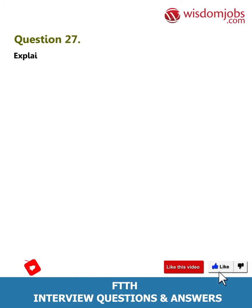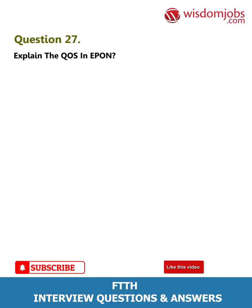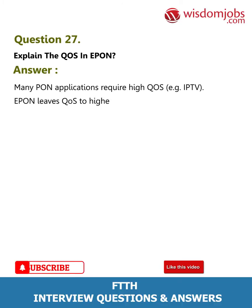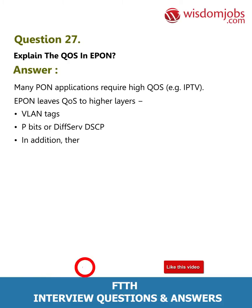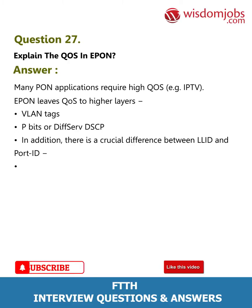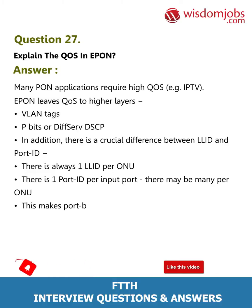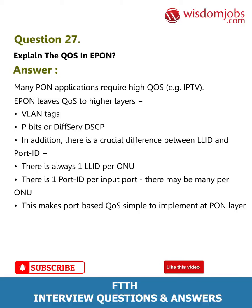Question 27: Explain the QoS in EPON. Answer: Many PON applications require high QoS, for example IPTV. EPON leaves QoS to higher layers — VLAN tags, P-bits, or DiffServ DSCP. In addition, there is a crucial difference between LLID and port ID: there is always one logical link ID per ONU, while there is one port ID per input port and there may be many per ONU. This makes port-based QoS simple to implement at the PON layer.